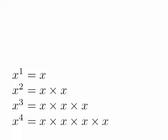x squared is x times x, x to the third is x times x times x, and x to the fourth is x times x times x times x.